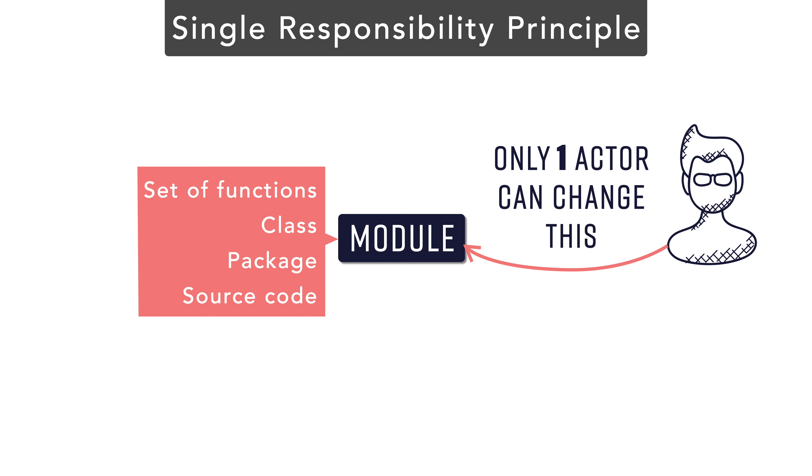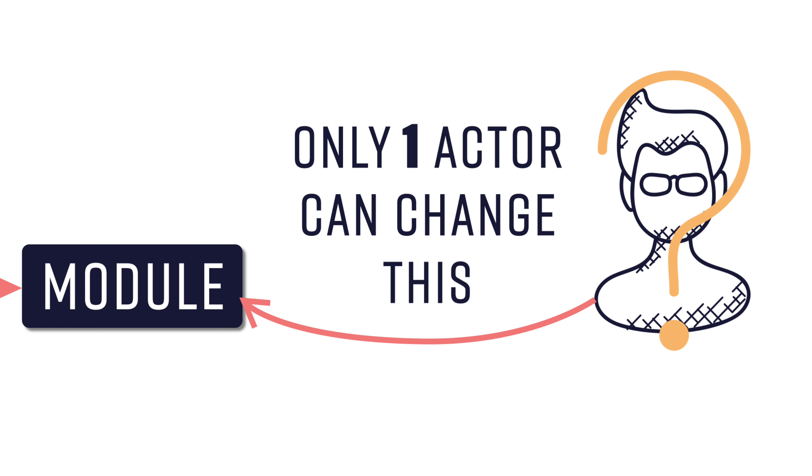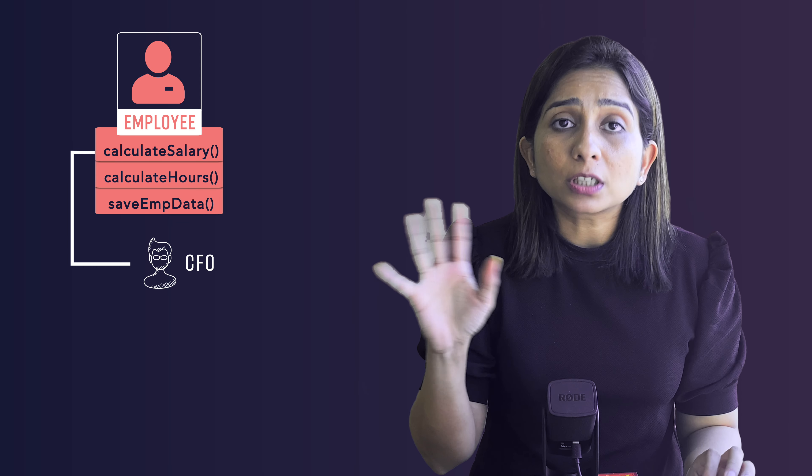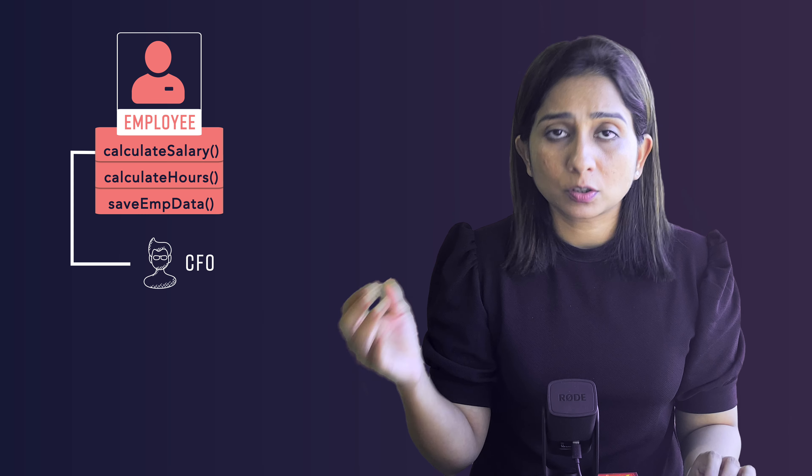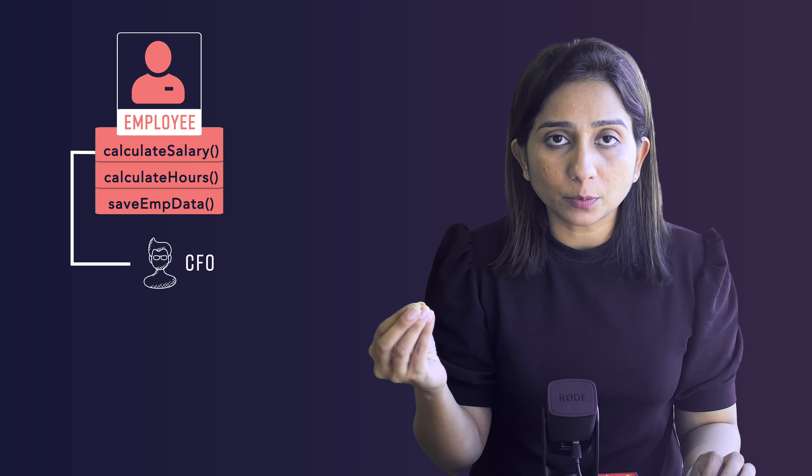Now, what does this mean? We can understand what a module is, but what is an actor here? Let's try to understand that using an example. There is a class called Employee that has three different methods: calculate salary, calculate hours, and save employee data. The calculate salary method can be used by the financial officer of a company — let's call that person CFO.